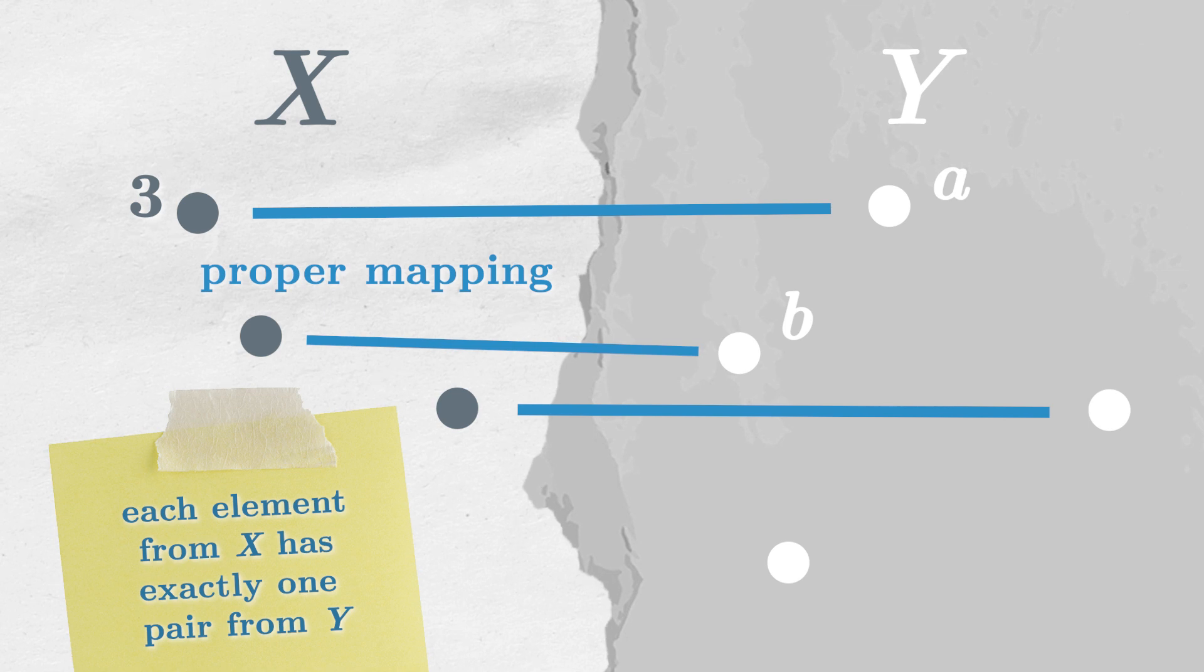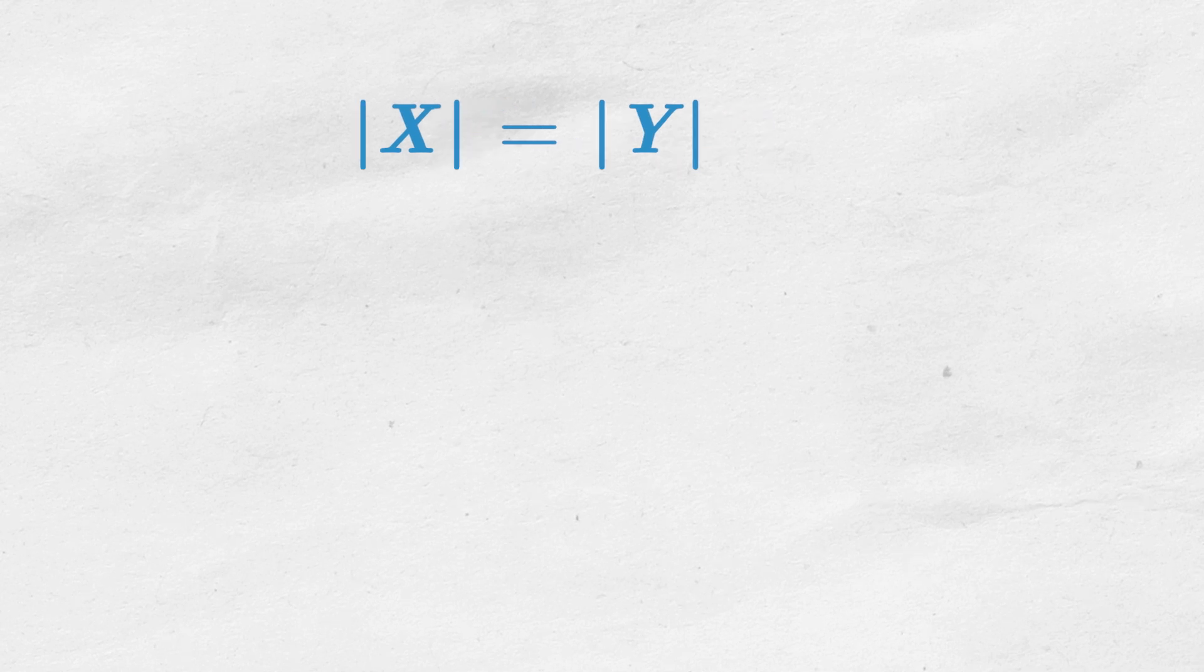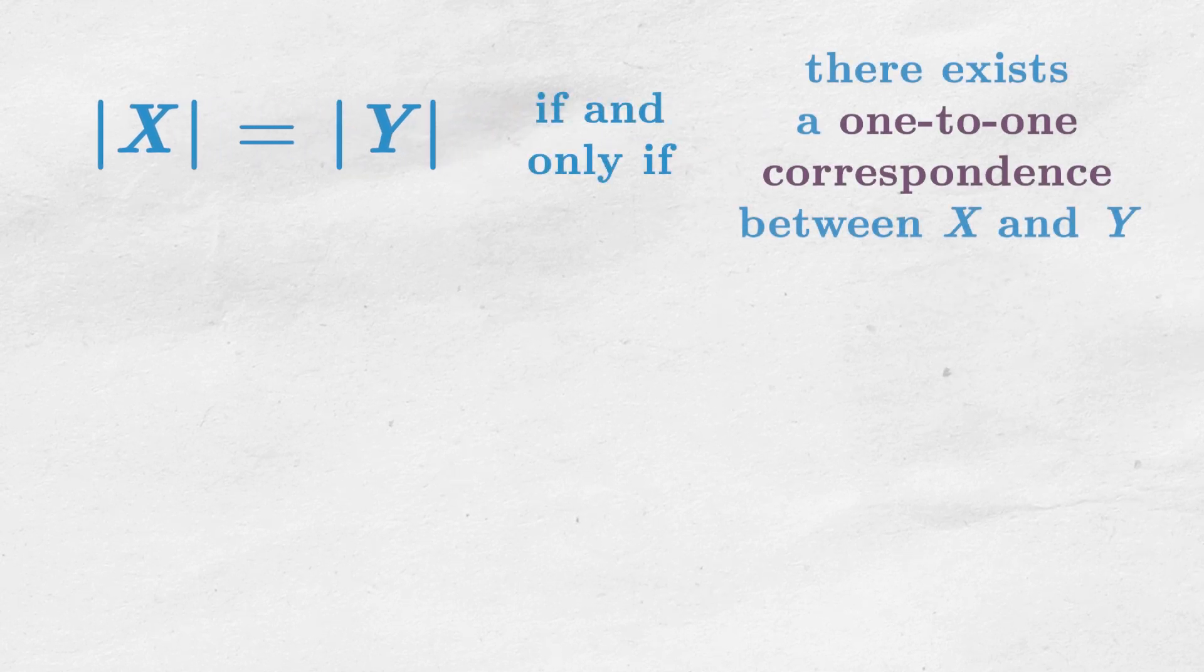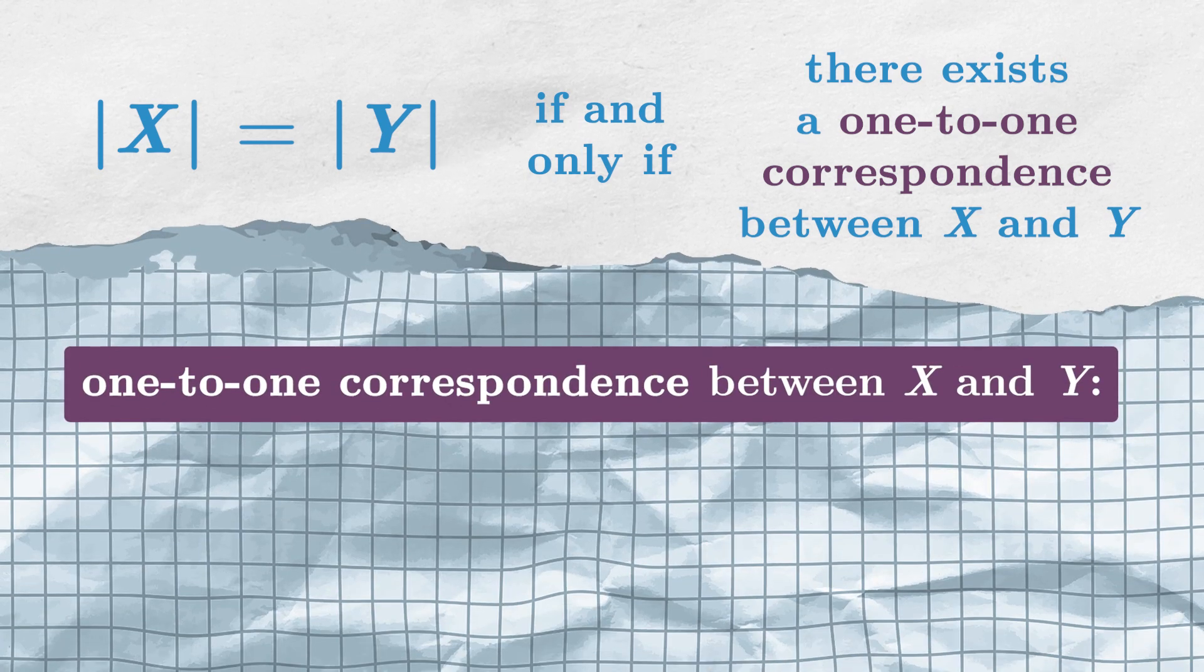Now, how this relates to cardinalities? Well, we will say that two sets are equivalent, or have the same cardinality, if and only if there exists a 1 to 1 correspondence between those two sets.